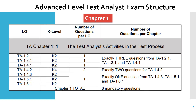Now let's get into the exam structure for the Advanced Level Test Analyst exam. Here LO stands for learning objective, K level is the difficulty level of the questions, this column talks about the number of questions per LO, and then we have the number of questions per chapter. This table is helpful for the preparation of your exam. From chapter one there will be six mandatory questions, broken down by learning objective and section from your syllabus.